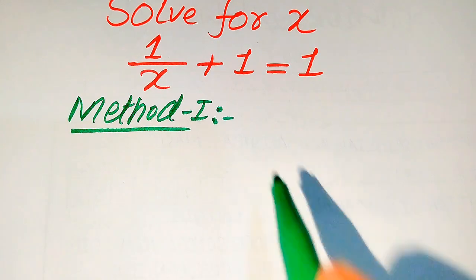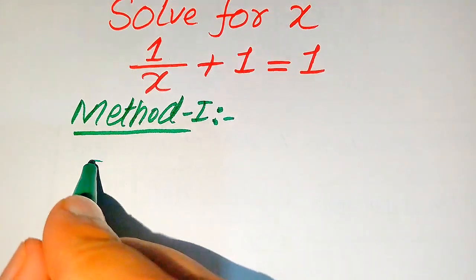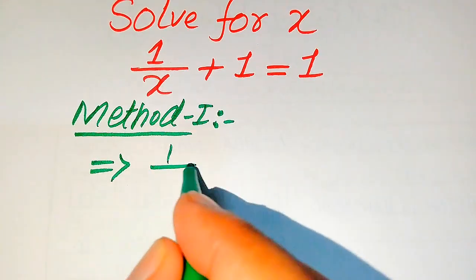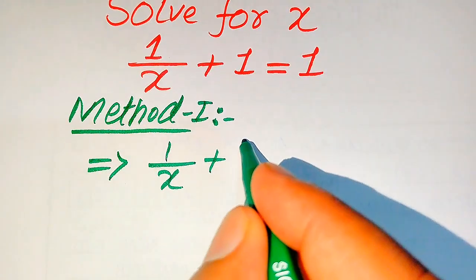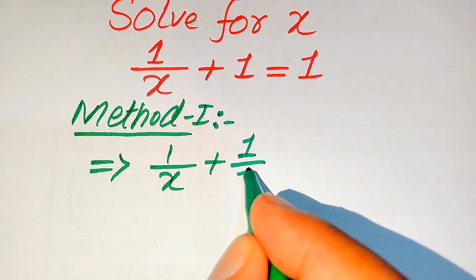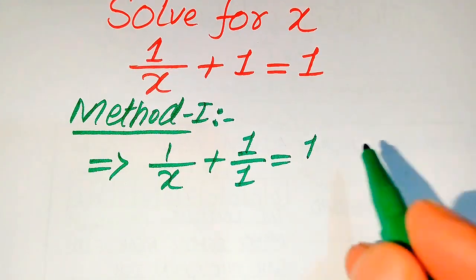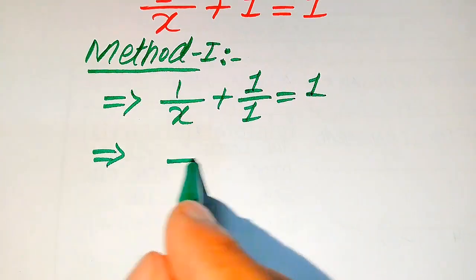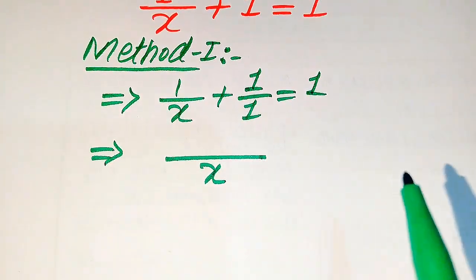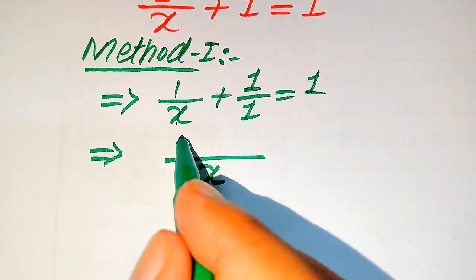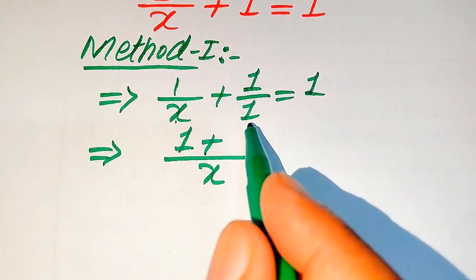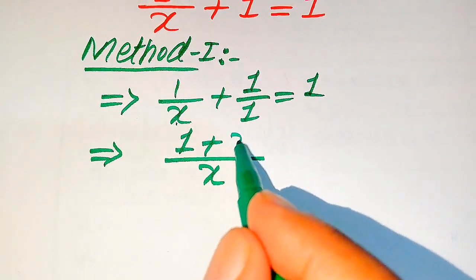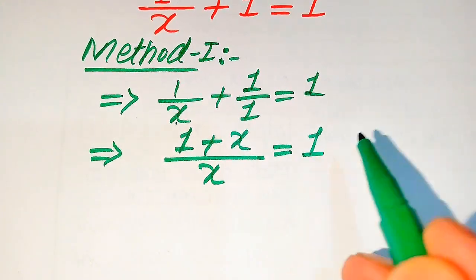In the first method, we need to take the LCM on the left-hand side. You see the denominator of this term is 1, so it is written as 1 over x plus 1 over 1, equals 1. The LCM of these terms will be x. When we divide x by x we get 1, plus when we divide 1 by x we get 1/x, so x times 1 equals x, and this equals 1.